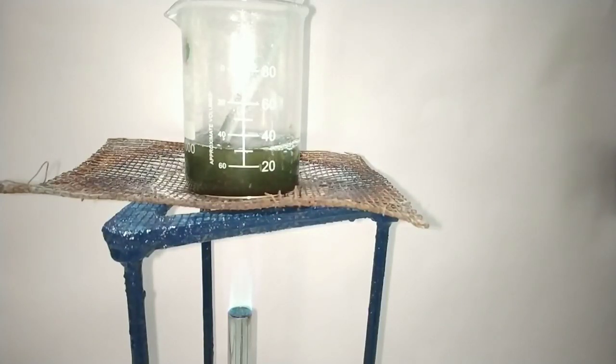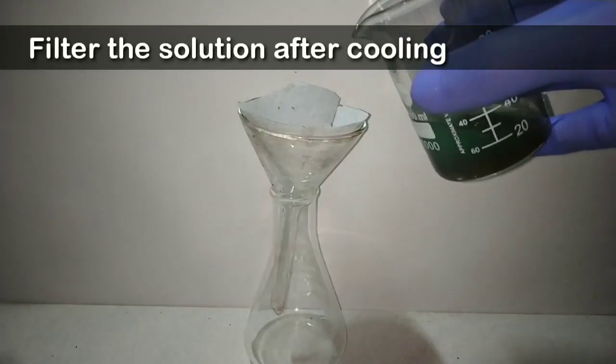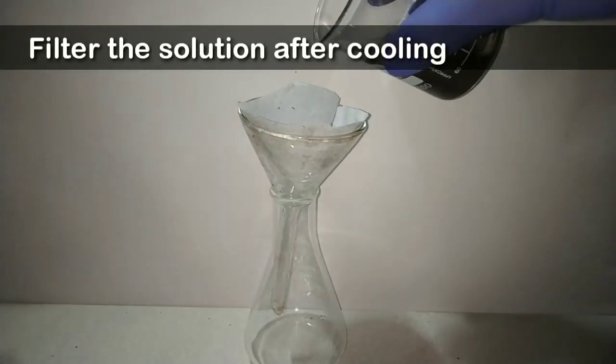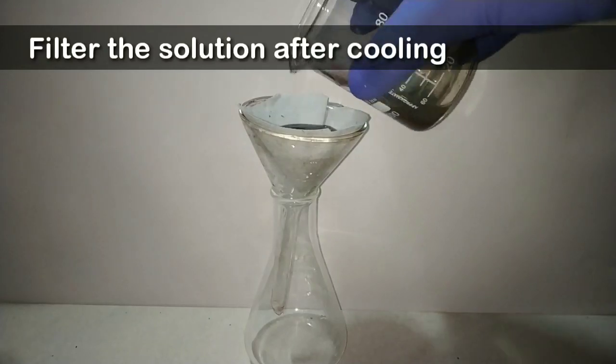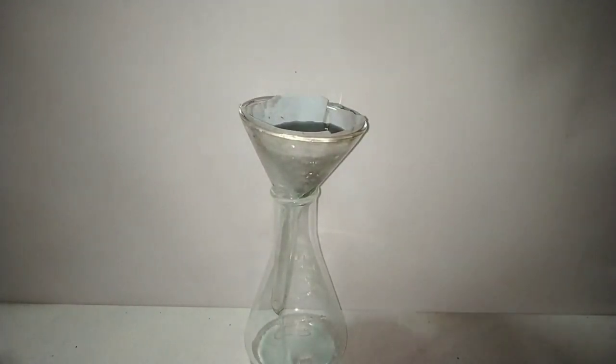Then the sodium sulfite reacts with copper 2 sulfate to form copper 2 sulfite and sodium sulfate. The sulfur dioxide then reacts with copper 2 sulfite to form copper 1 sulfite and sulfur trioxide. As soon as a molecule of copper 1 sulfite is formed, a molecule of copper 2 sulfite avidly binds to it to form copper 1-2 sulfite, that is the Chevrel salt.